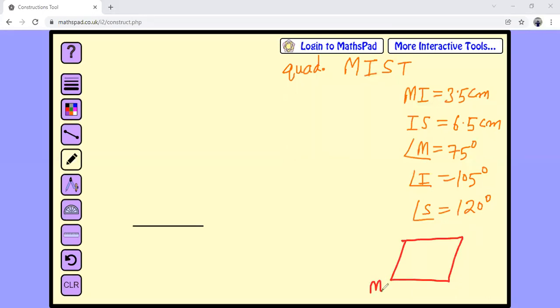So let's say this is MIST. This side should be 3.5, this angle should be 75, then 105, this angle should be 120, and IS is 6.5.